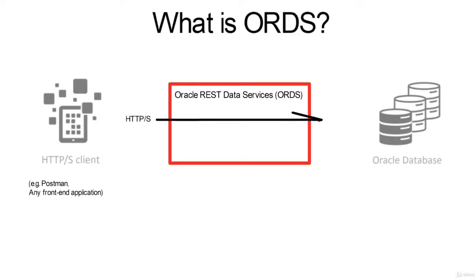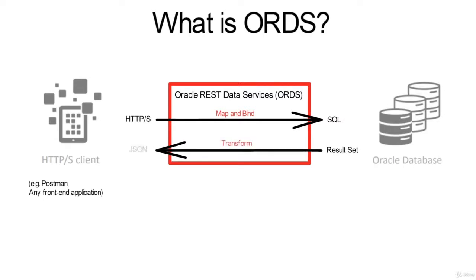ORDS takes the HTTPS request from the client and maps and binds each SQL statement. For each request there will be a SQL statement, and this passes through the Oracle database and returns a result set. The result set passes through ORDS again, which transforms it into a JSON object — basically converting table results to JSON — and returns it to the client.